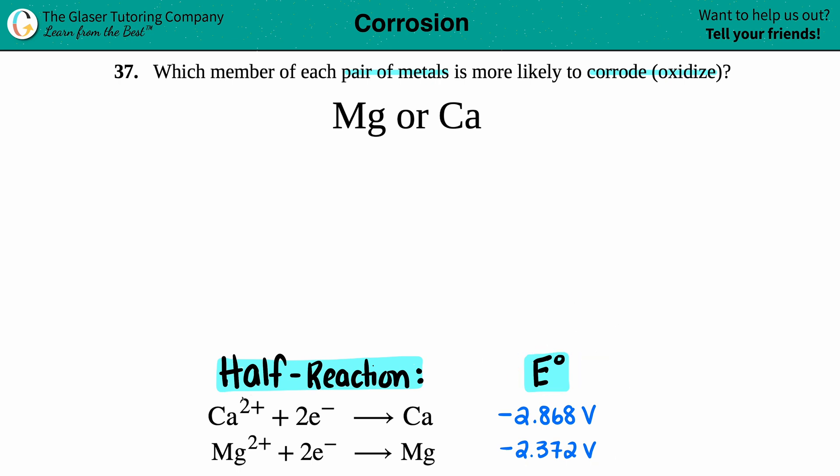So I just went into the back of a textbook, the appendix values, to find out what the calcium cell potential is, negative 2.868 volts, and the magnesium is negative 2.372 volts.